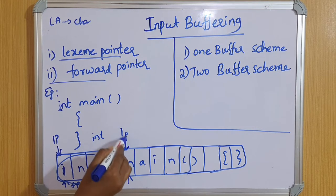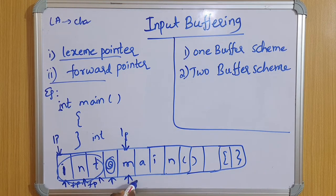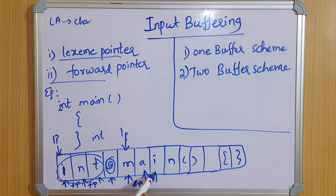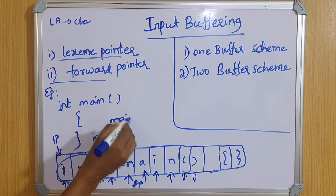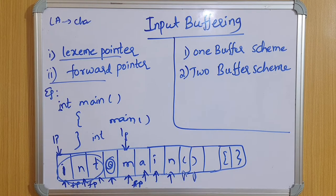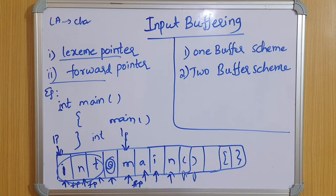When it finds the blank space, that total word — 'int' — is recognized as one token. Then the lexeme pointer and forward pointer are placed at 'm' of 'main', and it moves through a, i, n. If it finds blank space, enter, or tab, it automatically terminates and recognizes that as one token.